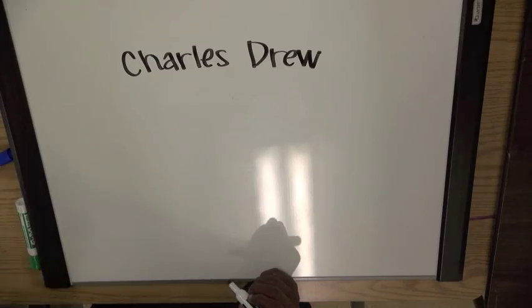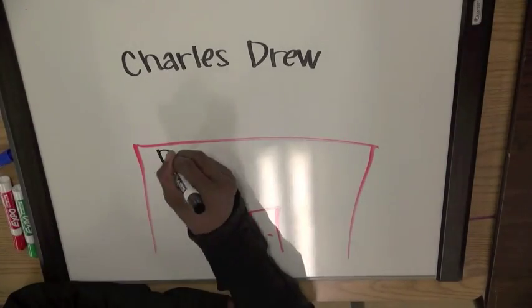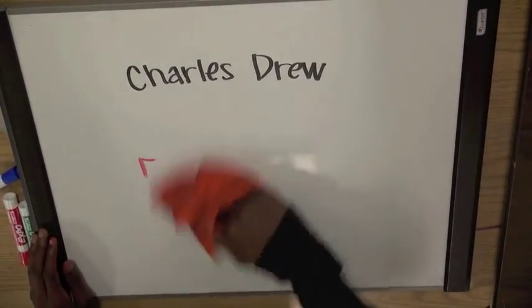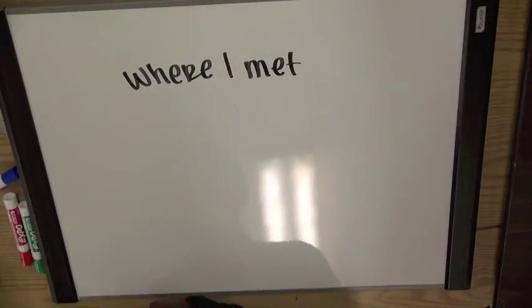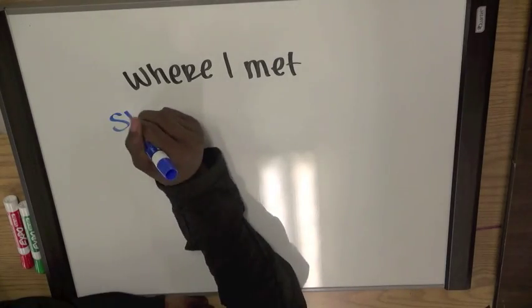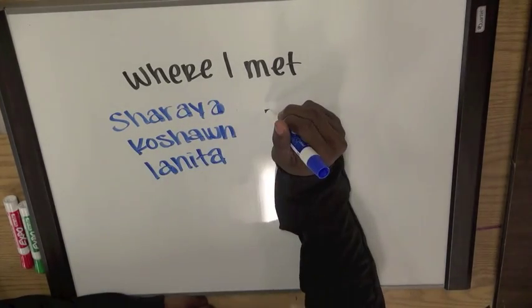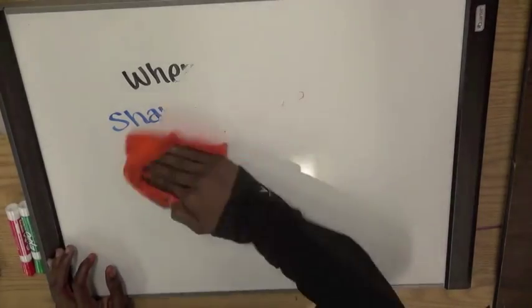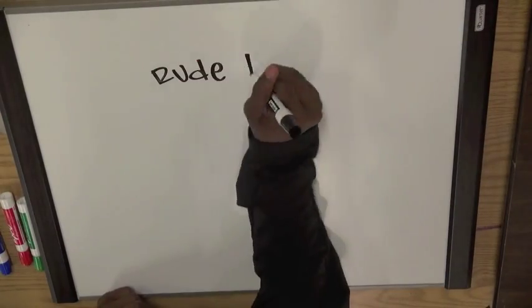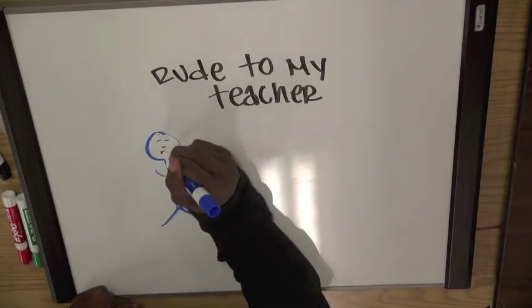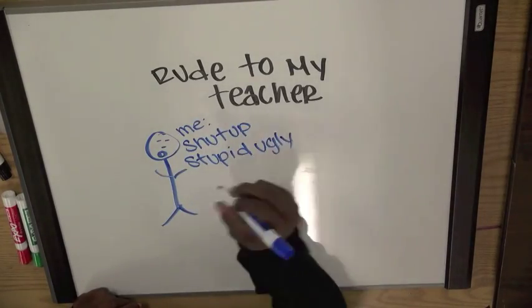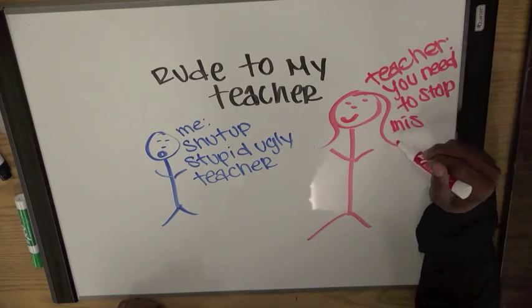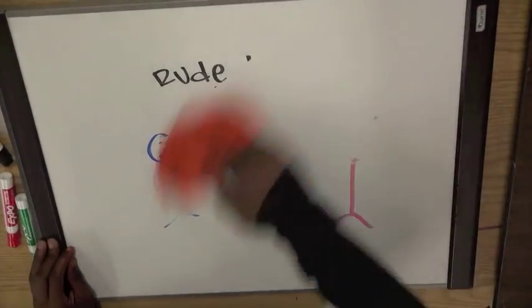In first grade I went to Charlottesville, where I got jumped a lot and no one really liked me. I met this girl Sharia, this boy Colshan, Lenita, and this girl Melissa, and they were my friends. I was very rude to my teacher. I used to tell her to shut up, call her ugly, call her stupid, and throw chairs and fight with her all the time.